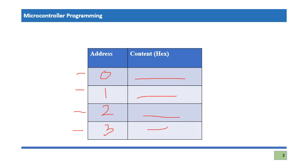If we number those four slots in binary, we need two bits — because 2 power 2 equals 4. So the first address is 00, the second address is 01, the third address is 10, and the last address is 11. Each of these is the address of a specific memory location.